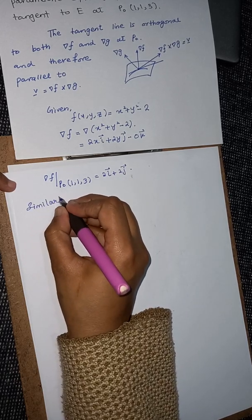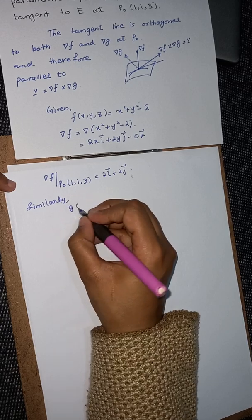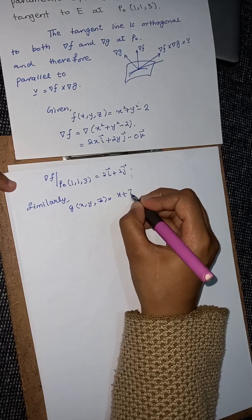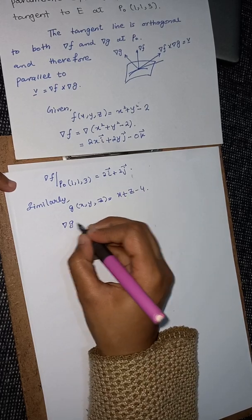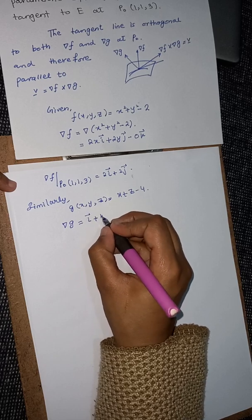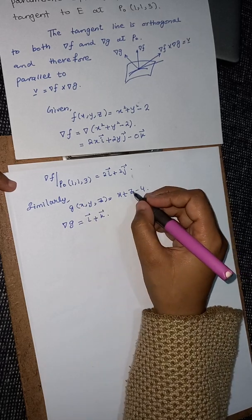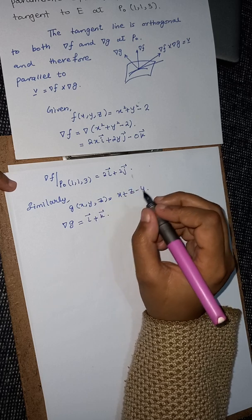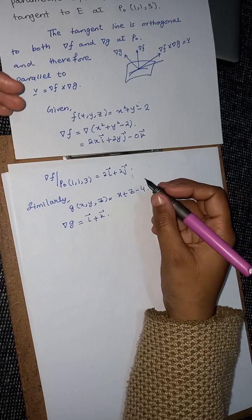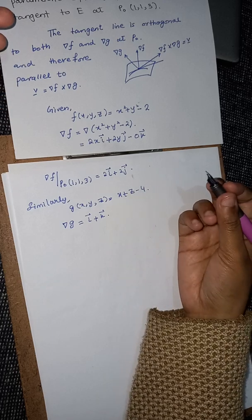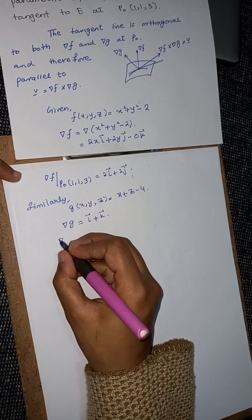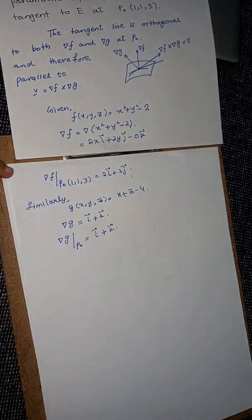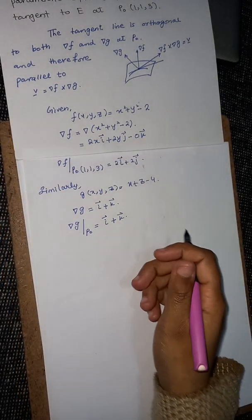Similarly, our surface g(x, y, z) = x + z − 4. Taking its gradient, we get i + k — because this surface does not involve y, so the partial derivative with respect to y is treated as a constant and equals zero. The gradient of g at point P₀ remains the same: i + k, since no variable-dependent terms change.